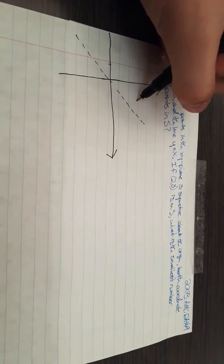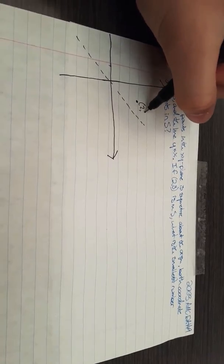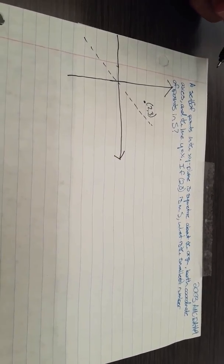If (2,3) is in S, what is the smallest number of points in S?